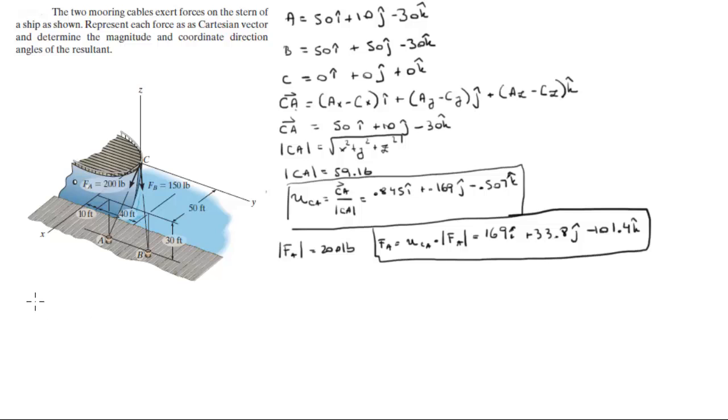So we're going to do the exact same thing for CB. Vector CB comes out to be 50i plus 50j minus 30k. Magnitude of CB can be found and it comes out to be 76.8—you find it the same way we did CA over here.